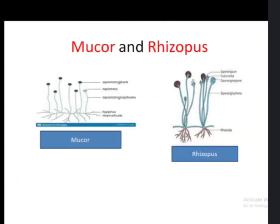Here is the structure of Mucor and Rhizopus. In Mucor, sporangium, spores, sporangiophores, hyphae, and mycelium are seen. In Rhizopus, sporangium, columella, sporangiospores, and rhizoids are seen. The main difference between Mucor and Rhizopus is that in Rhizopus, rhizoids are present, and this distinction is visible only under the microscope.